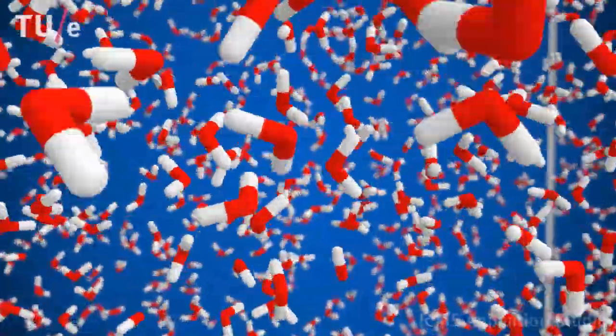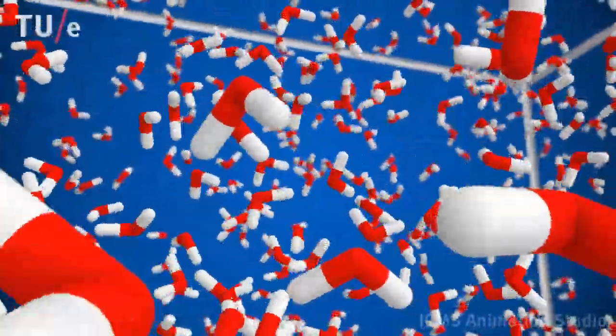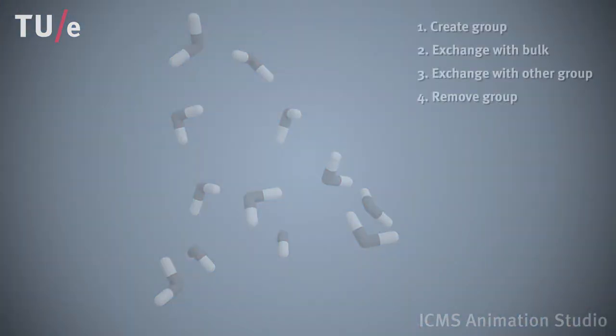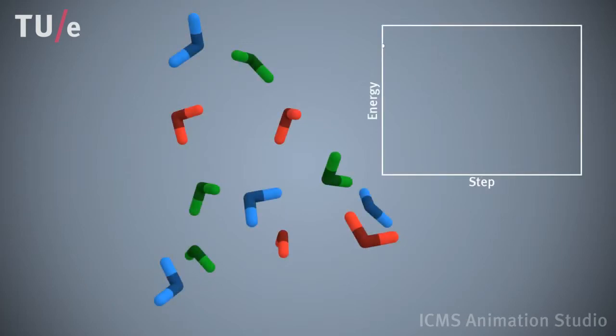In the example shown here, we create groups of water molecules using four basic steps: create a group, exchange a molecule in a group with one in the bulk, exchange molecules between two groups, or remove a group.